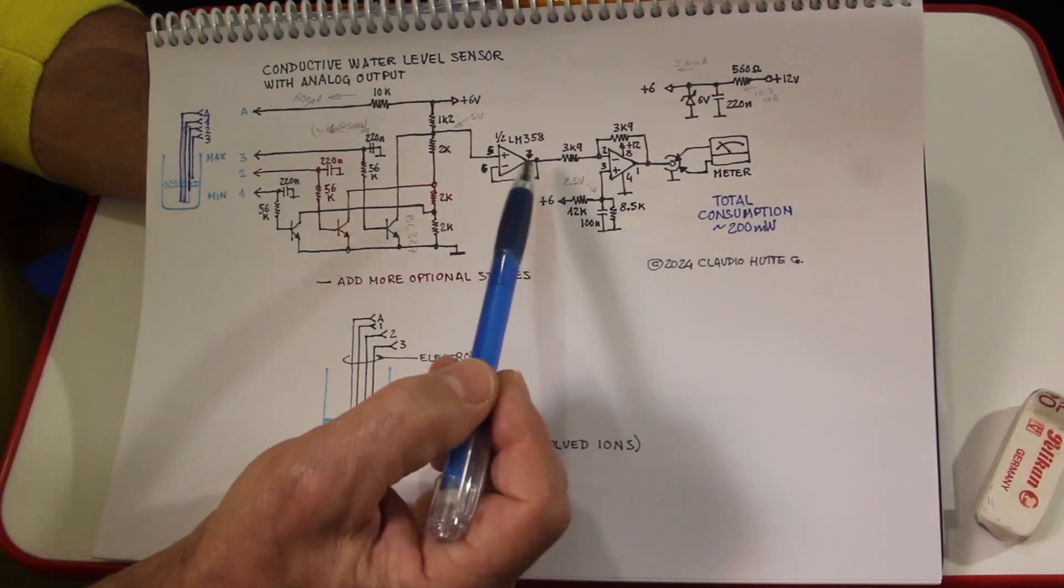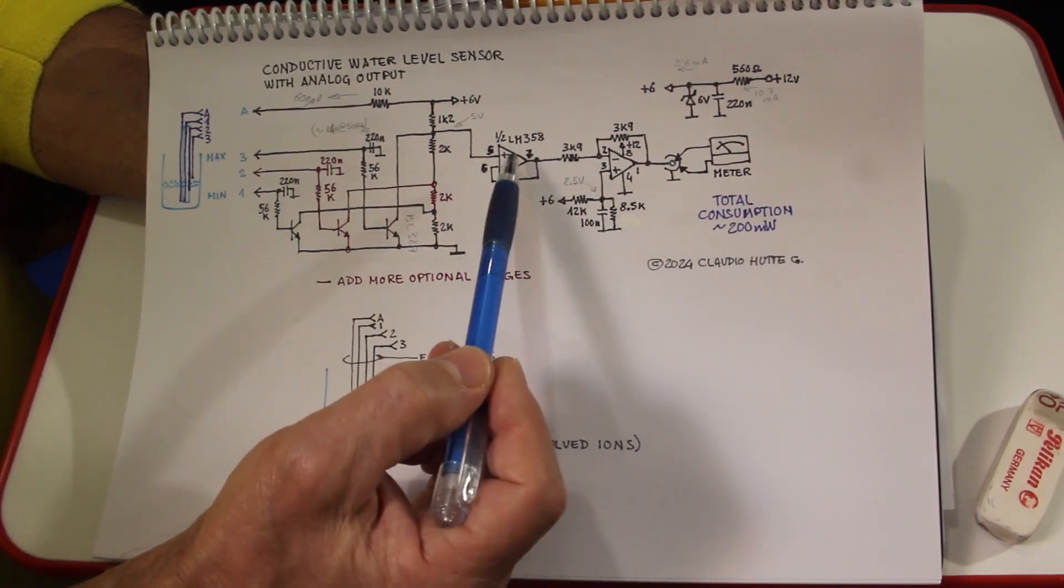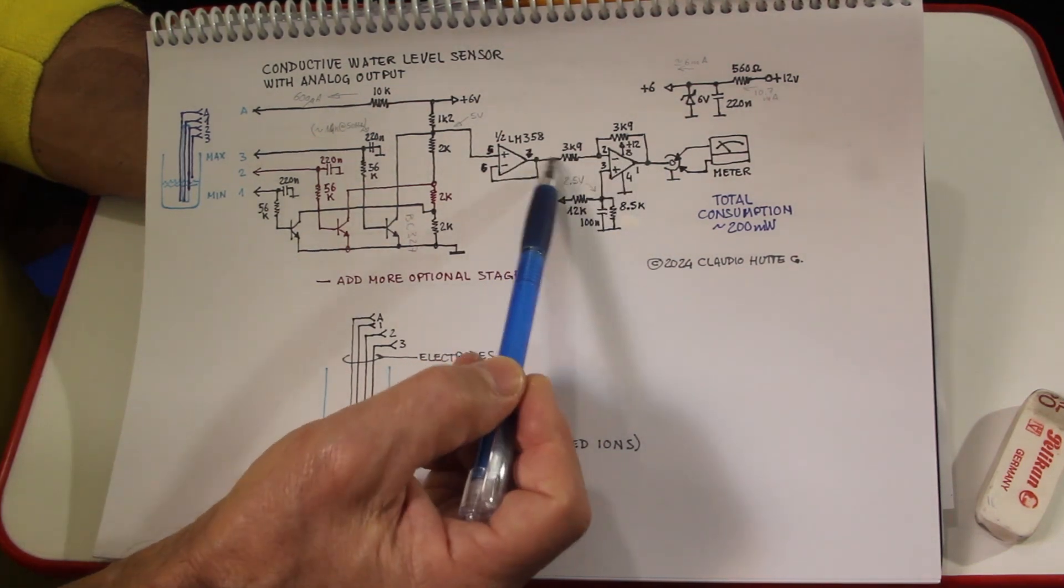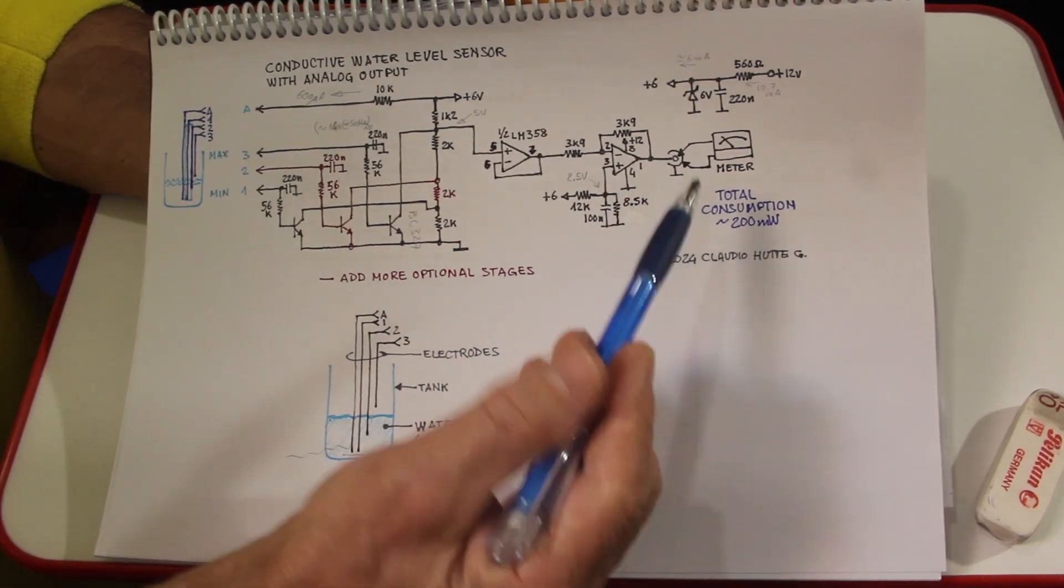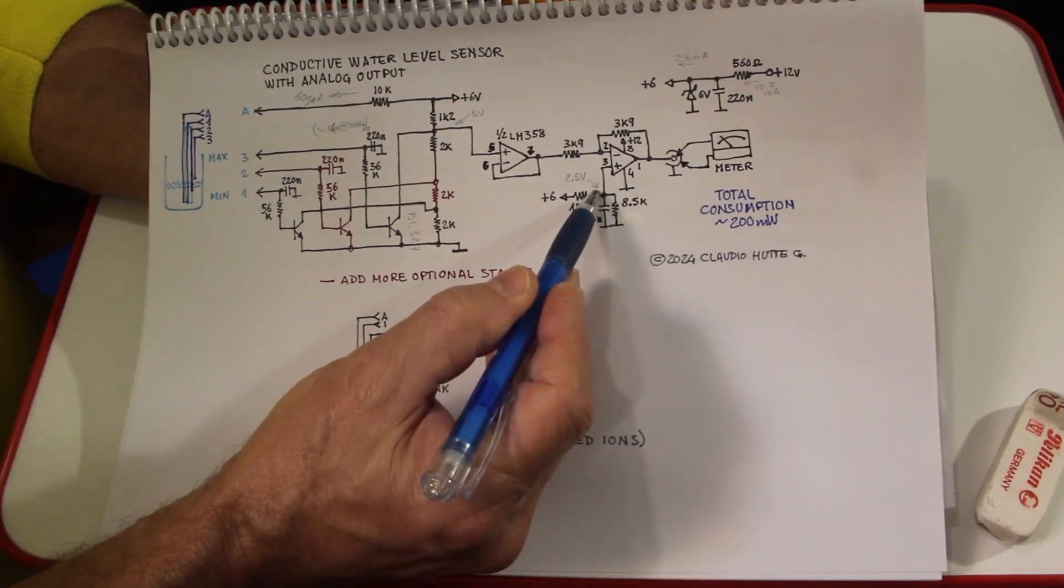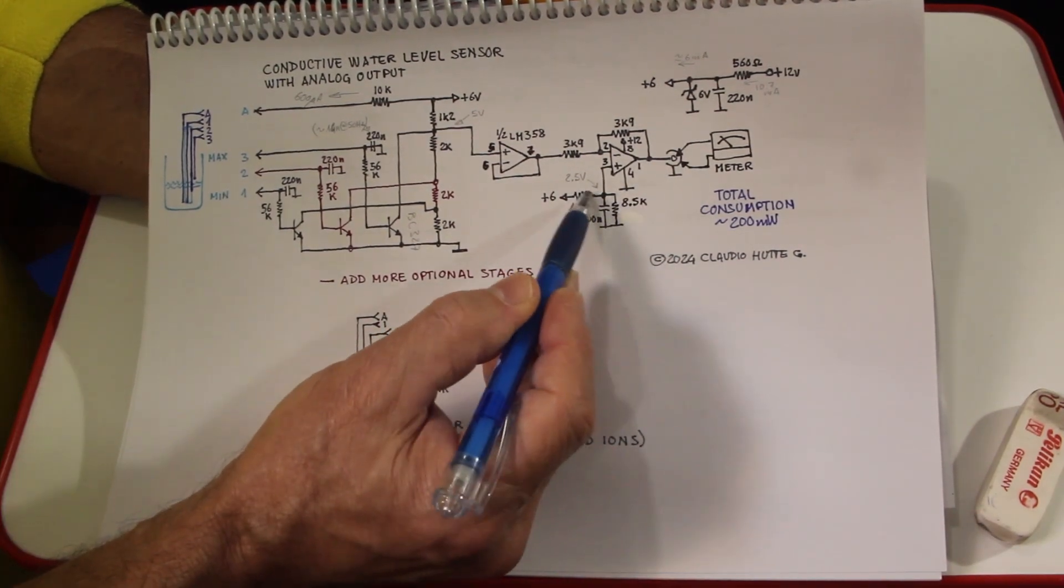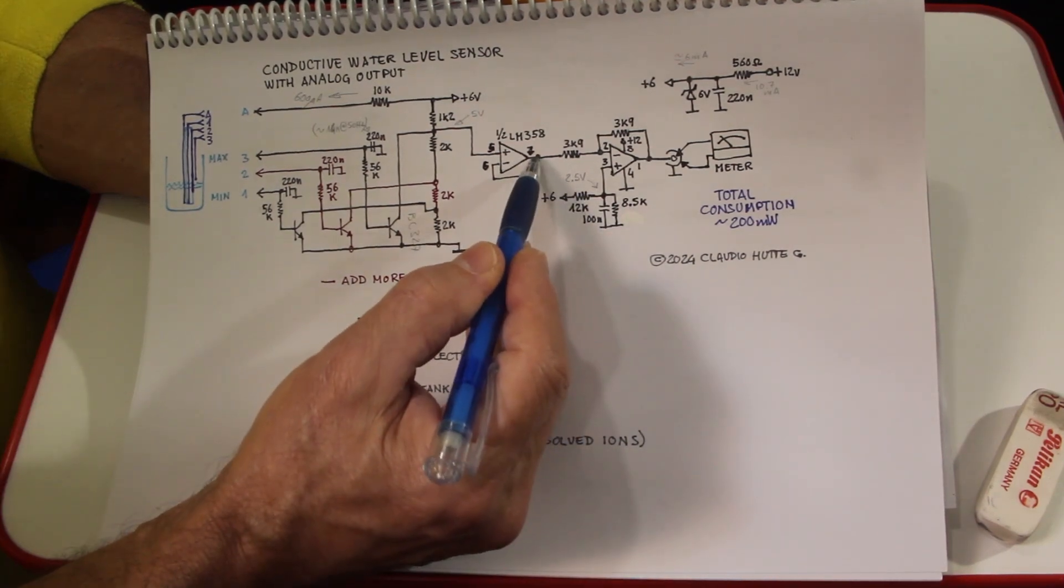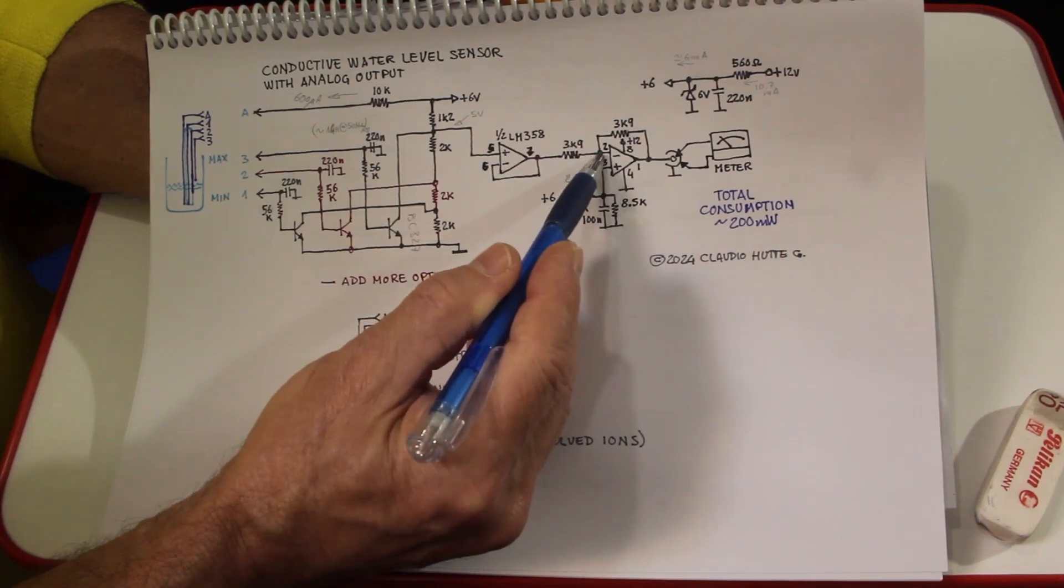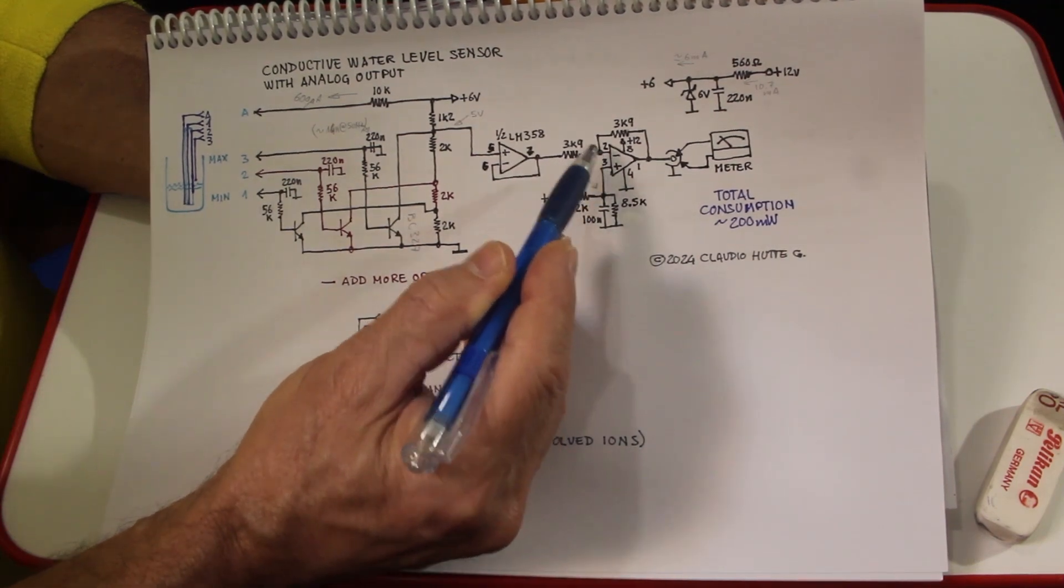This is a buffer through this operational amplifier. And then this inverting op amp makes this point to go to 0, because here we have 2.5V, approximately 2.5V. So when this point goes to 5V, to have this point at 2.5V, we need to have 0 here.